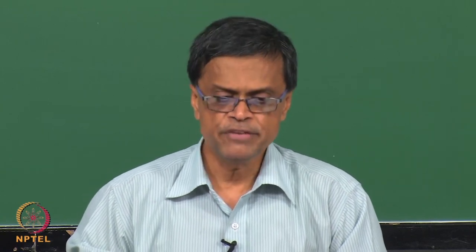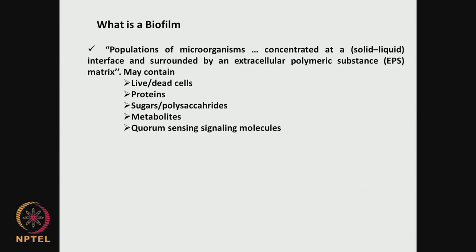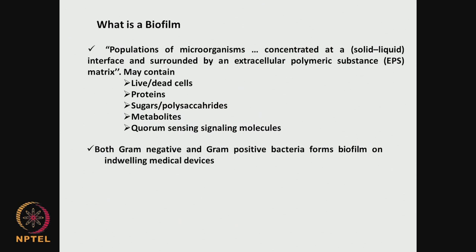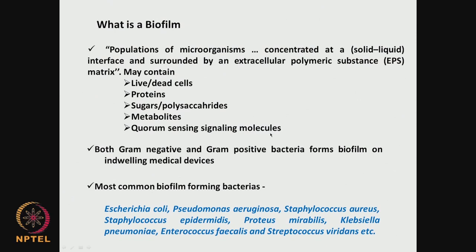What is this biofilm? The definition is: it is a population of microorganisms concentrated at a solid-liquid interface and surrounded by an extracellular polymeric substance, called the EPS matrix. This biofilm is an attachment on material surface — it could be stainless steel, a polymer, or a ceramic, even the inside lining of a vascular graft. It may contain live cells, dead cells, proteins, sugars, polysaccharides, metabolites produced by the bacteria, secondary metabolites, and also quorum sensing signaling molecules.